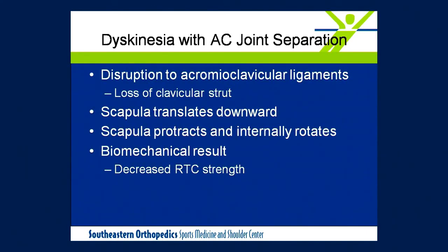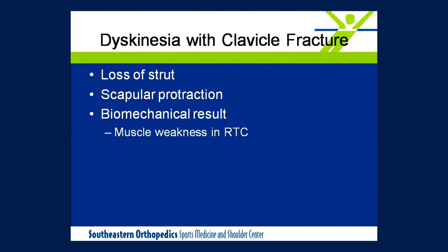With an AC joint separation, we would see a loss of the strut of the clavicle. The scapula actually slides downward along the thoracic wall and is allowed to protract and internally rotate around the thoracic wall. Because of this protracted position, we then see a subsequent reduction in rotator cuff strength. Similarly, with a clavicle fracture, you have that loss of the strut, a protraction of the scapula, and a weakening of the rotator cuff.